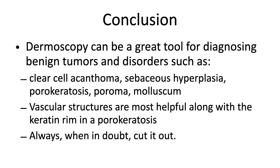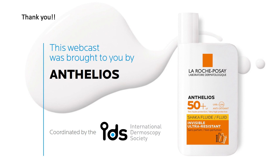In conclusion, dermoscopy can be a great tool for diagnosing benign tumors and disorders such as clear cell acanthoma, sebaceous hyperplasia, porokeratosis, poroma, and molluscum. The vascular structures are most helpful, along with the keratin rim in porokeratosis. Always, always — when in doubt, cut it out. Thank you for your attention, and thank you to the IDS for all the great work that is done. Join now if you haven't already.